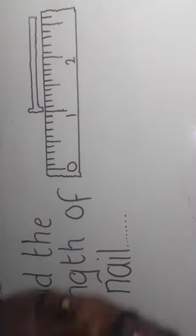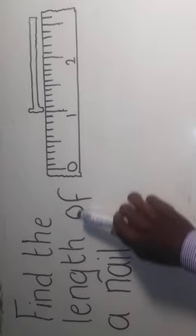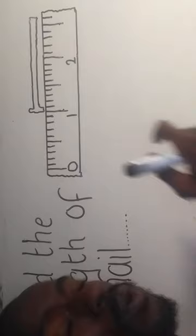We have a physics question that says: find the length of a nail. This nail you're seeing on top - this is a ruler here which helps us to measure the length.